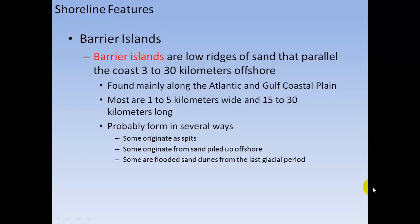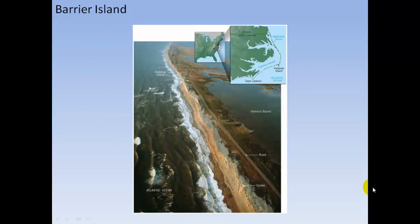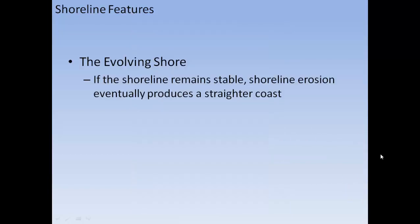Some barrier islands originate from sea spits, some from sand piling up offshore, and some are flooded sand dunes from glacial periods. Here is a barrier island — Hatteras Island.